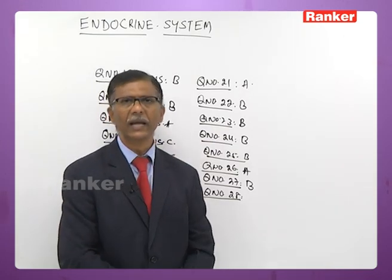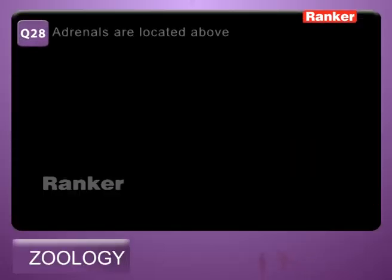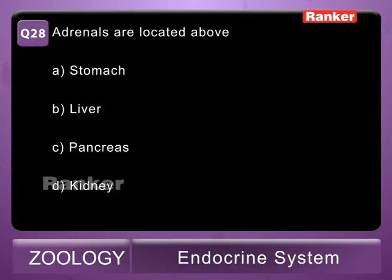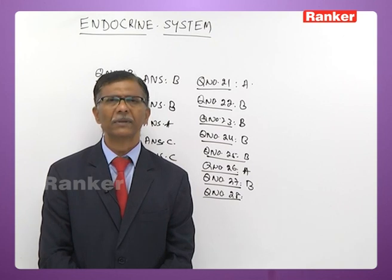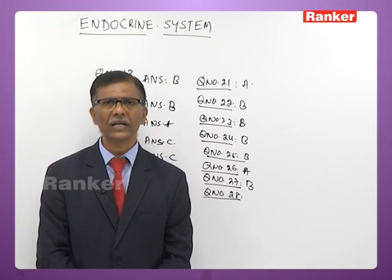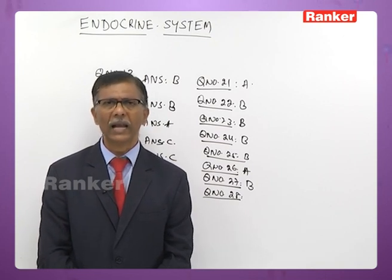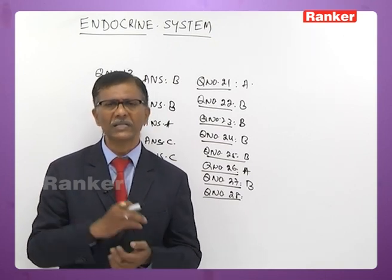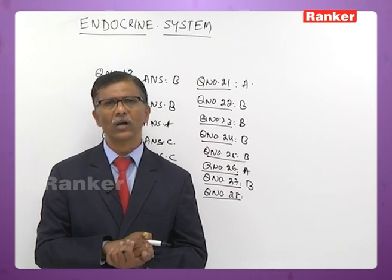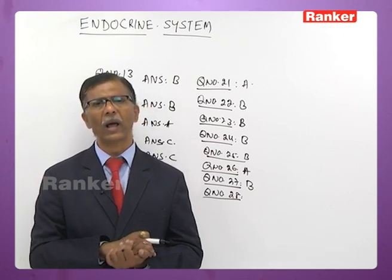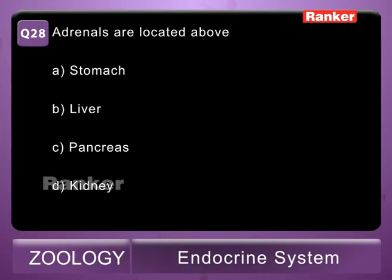Twenty-eighth question: adrenals are located above A - stomach, B - liver, C - pancreas, D - kidney. Adrenals are present above the kidney, which is why they are also known as adrenal (added to renal) or suprarenal glands. The correct answer is D — kidney.